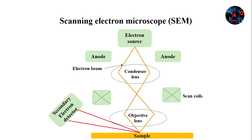Here you can see a schematic diagram of a scanning electron microscope. In SEM, an electron beam is directed toward the specimen instead of a light beam, as in the case of an optical microscope.